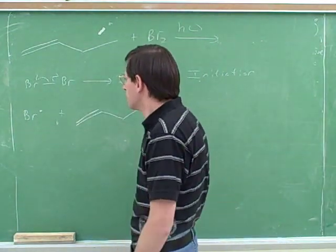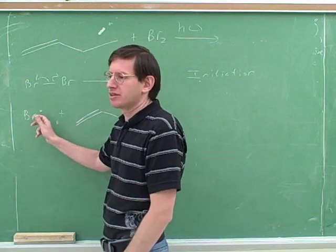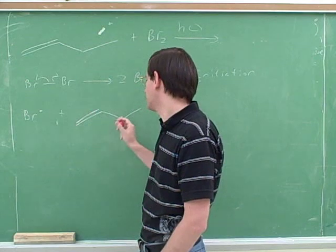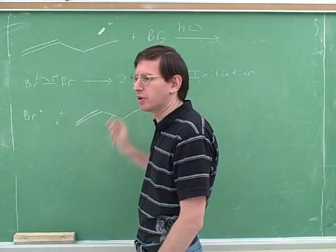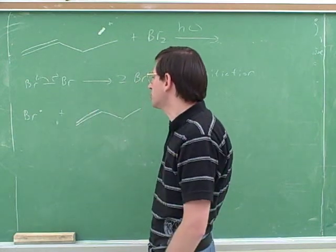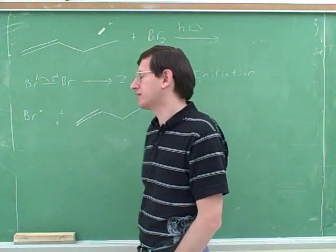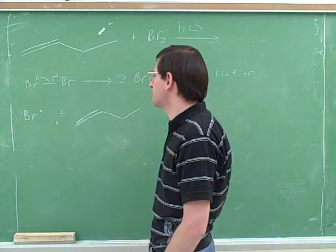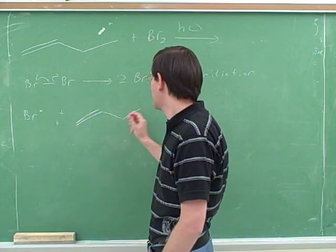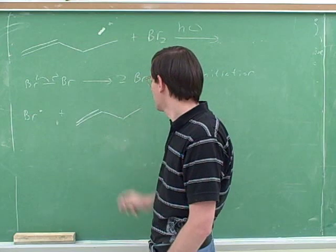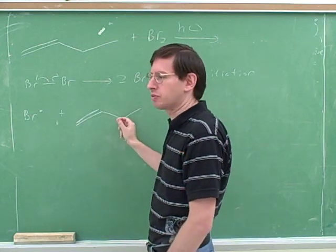The bromine is going to steal a hydrogen. Now, it's not going to steal a hydrogen from the alkene. It's going to steal a hydrogen from an alkane carbon just like before. Okay. The question is, and notice I'm using bromine, which is highly selective. Who would the bromine prefer to take the hydrogen from? This carbon or this carbon? The first one. That's right. It's going to prefer to take it from this one.